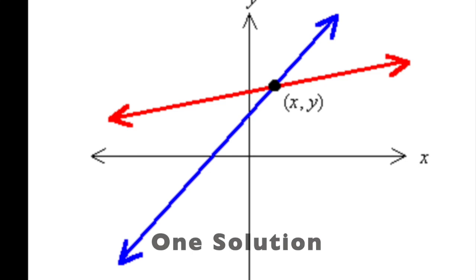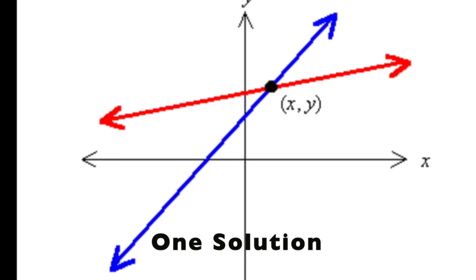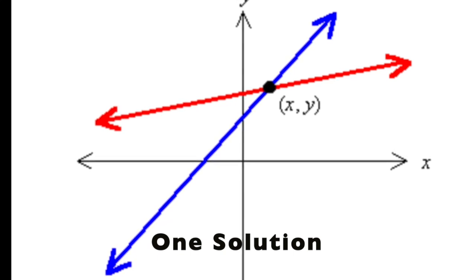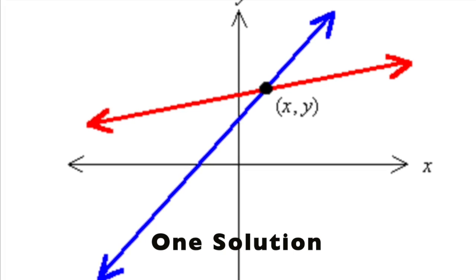So what is a solution to a system? Well, a solution is really just where those two lines overlap. In that place it overlaps is the solution to the system. So if they overlap and intersect once, you have one solution.